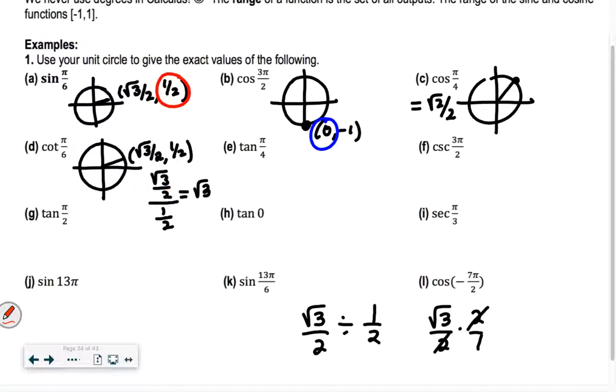So the next one, I have tangent of π/4. Tangent is the sine over the cosine. π/4 is the easy one. Do you guys remember the x and y values for π/4? √2/2. So it's √2/2 divided by √2/2. So we end up getting 1.